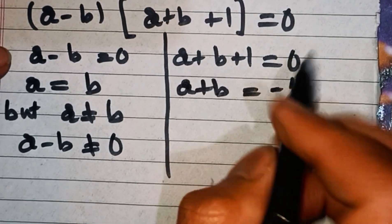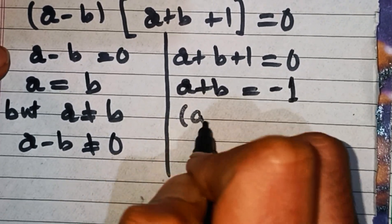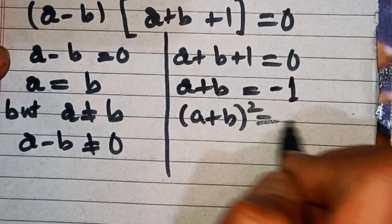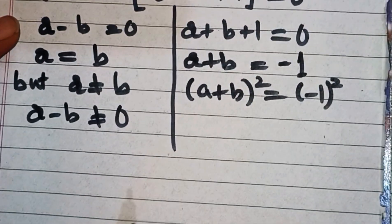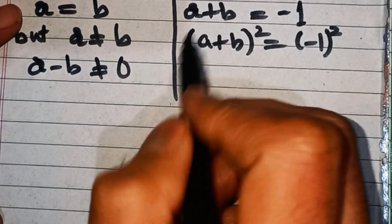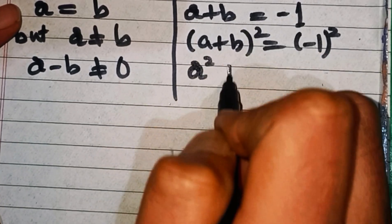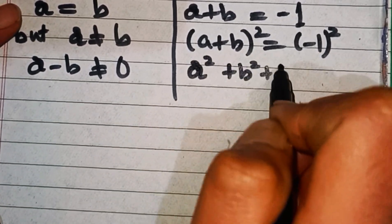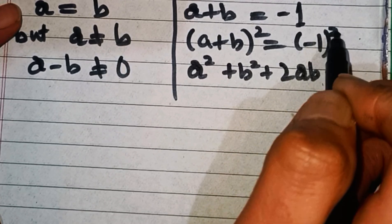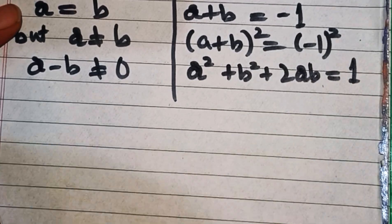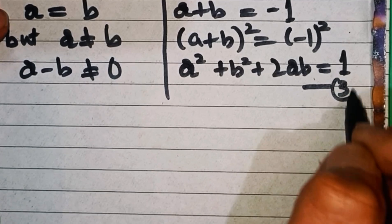Now let's square both sides: (a + b)² = (-1)². We know that (a + b)² = a² + b² + 2ab, and (-1)² = 1. So a² + b² + 2ab = 1. Let's make this equation number three.